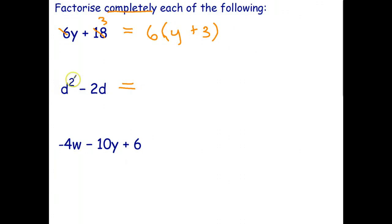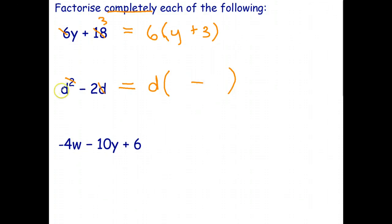For the second question with d²−2d: d² has two factors of d and the other term has one factor of d. There are no common numerical factors, so the highest common factor is d. Taking out d leaves d from d², and leaves −2 from −2d. So d²−2d = d(d−2). Check: d×d=d², d×2=2d.